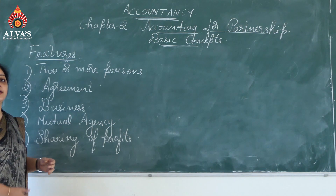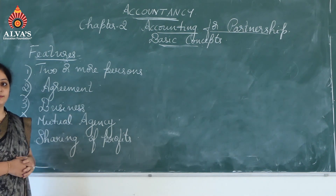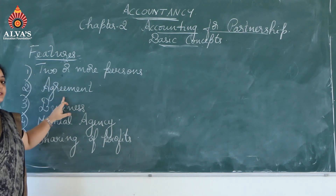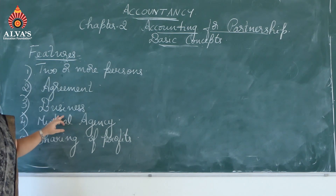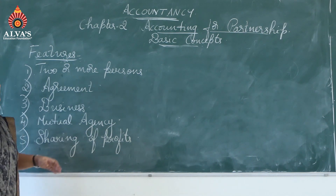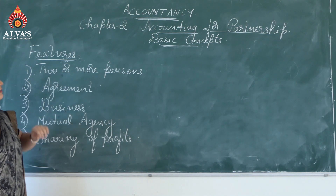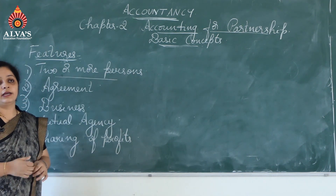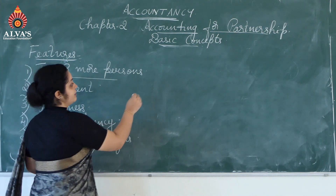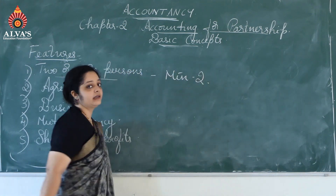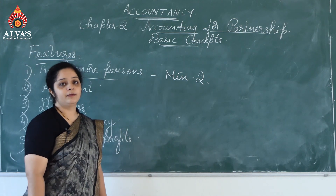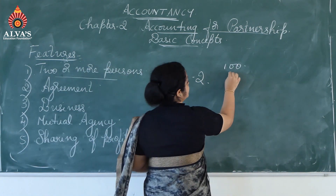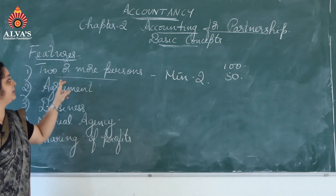You have already studied features of partnership in detail in your first year business studies, so we will look at this topic in brief. I have pointed out five features of partnership business. The first is: there should be two or more persons. Second is agreement. Third is there should be some kind of business. Fourth is mutual agency. Fifth is sharing of profits. The first feature says there should be a minimum of two or more persons. As per the Companies Act of 2013, the maximum limit was 100, but in the year 2014 it was reduced back to 50.